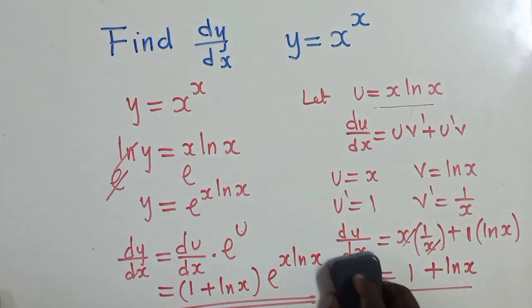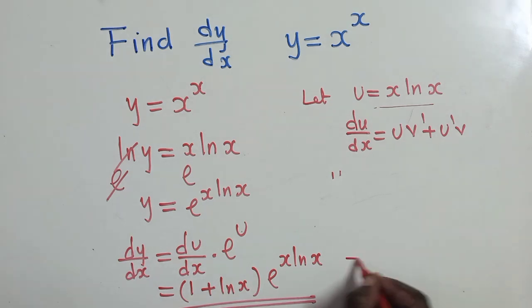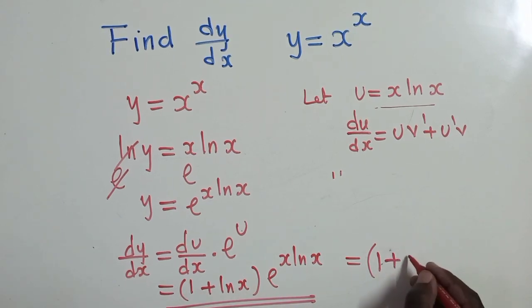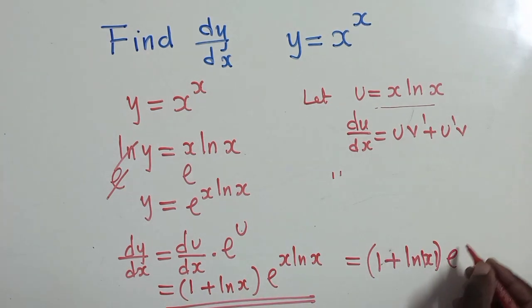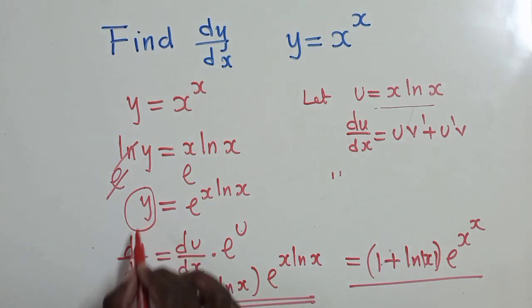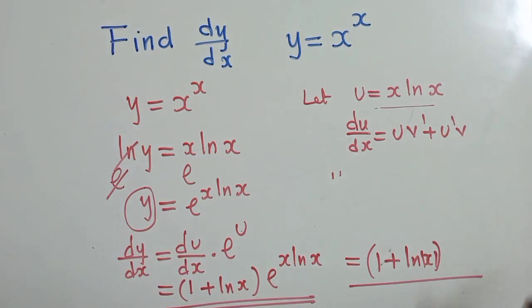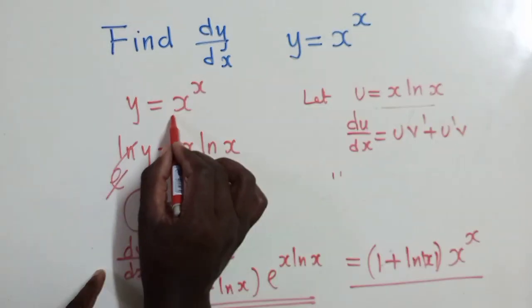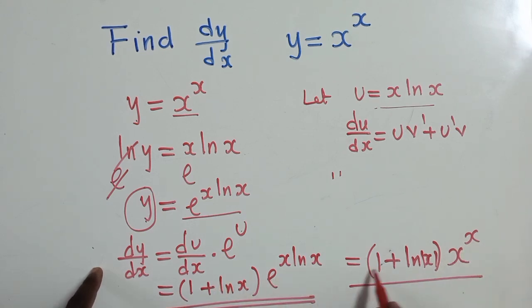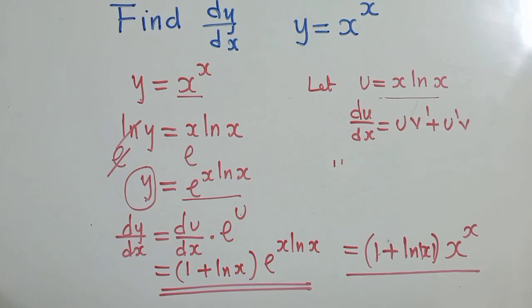If you want to simplify further, you can write it as (1 + ln(x)) · x^x, because e^(x·ln(x)) equals x^x, which also equals y. You can end here or at the previous step — either is fine. Thank you so much for watching, remember to subscribe to my YouTube channel. This has been Z Chamba Jacob, bye.